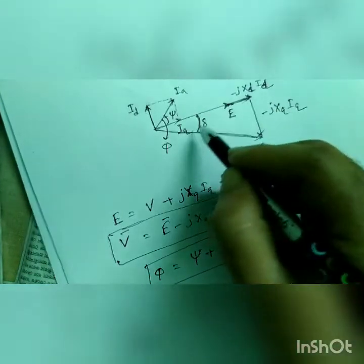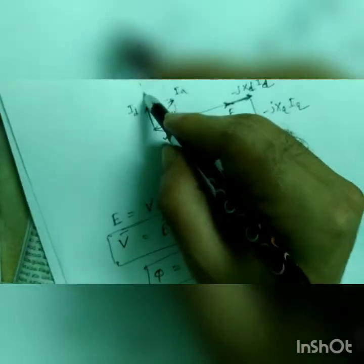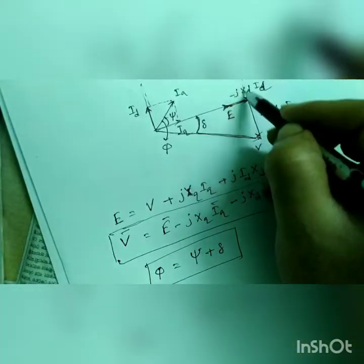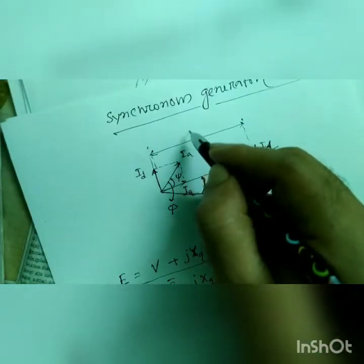It will be v cos delta, because this is delta, this is v, so it will be v cos delta. This total length will be v cos delta.